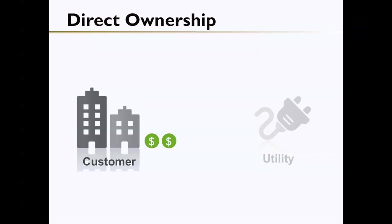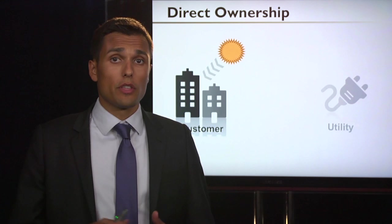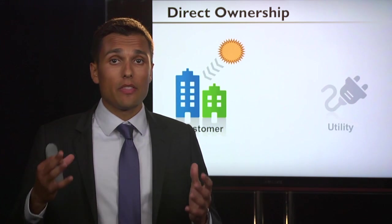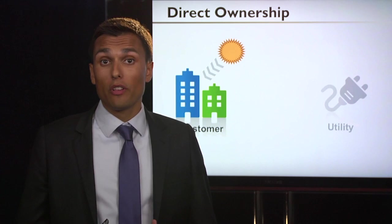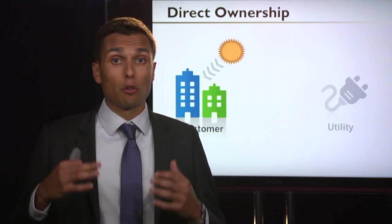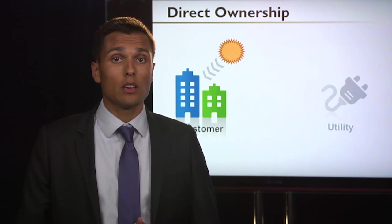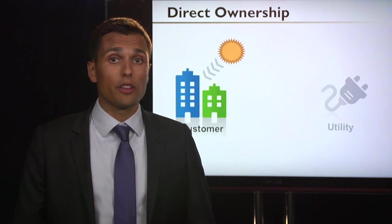The first ownership structure is direct ownership. This is where a customer, with upfront cash or by taking out debt, will finance, own, and operate a solar installation themselves. They'll own the system upfront and receive all the electricity from the system as well as any incentives, replacing electricity they would have previously purchased from the grid.